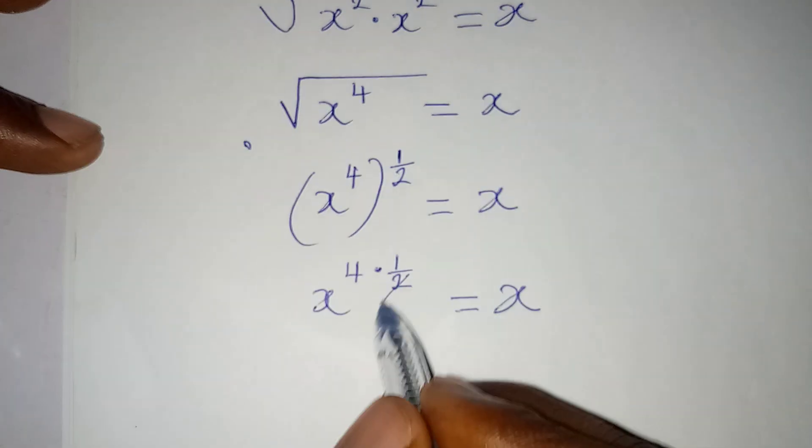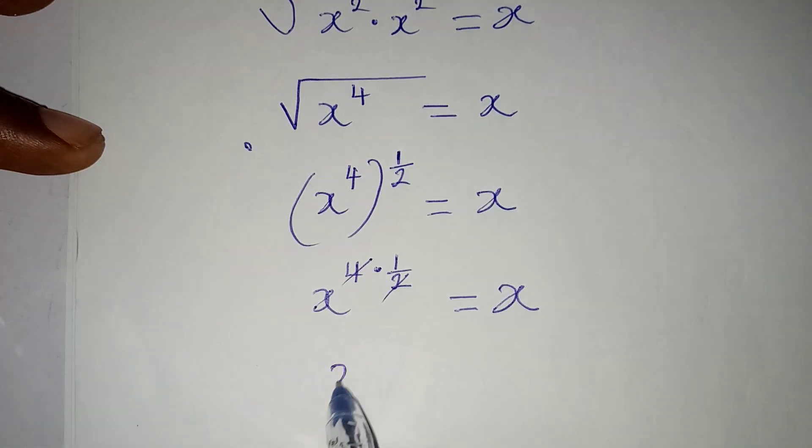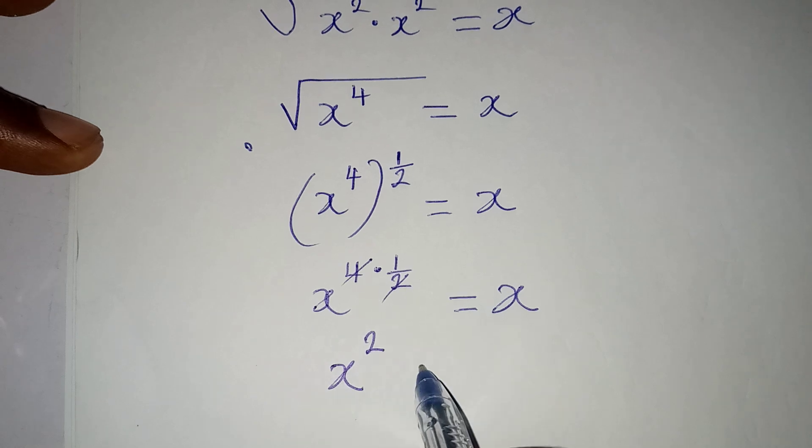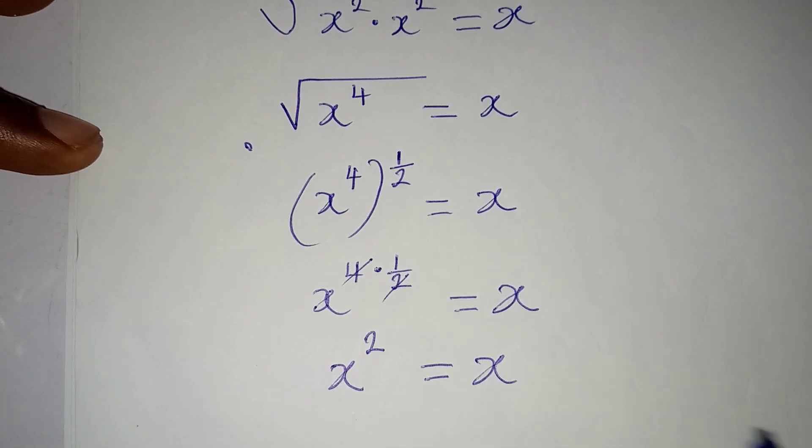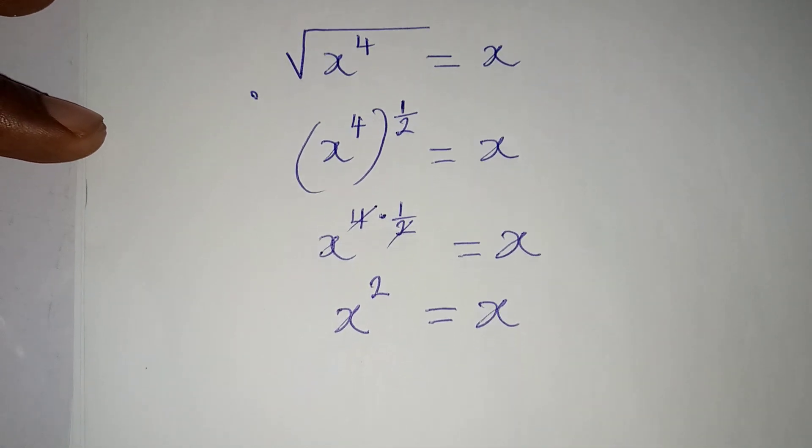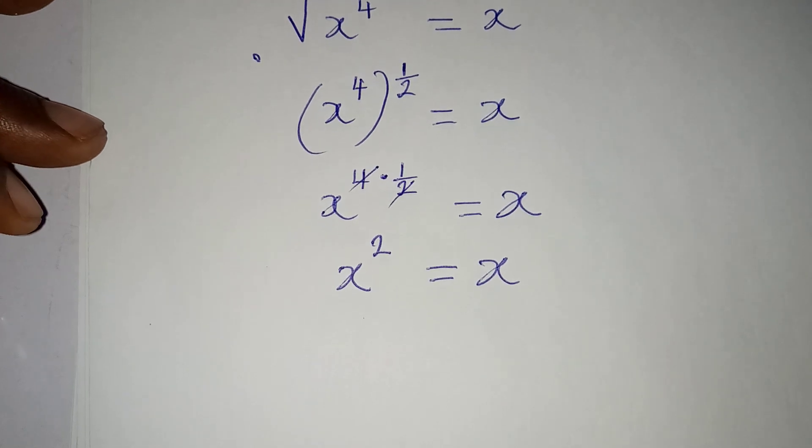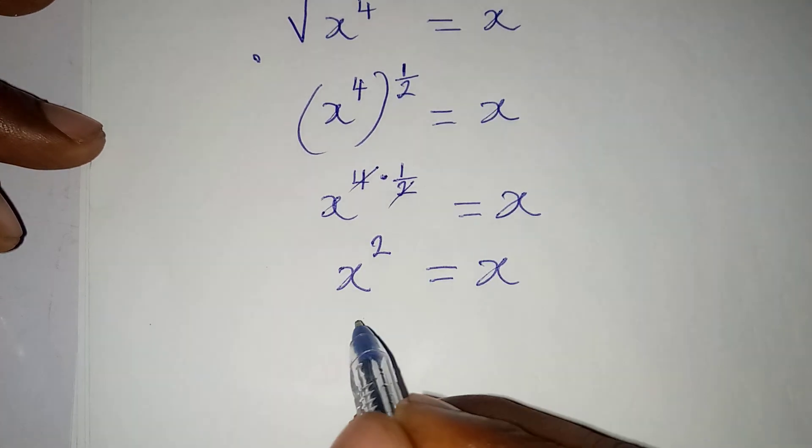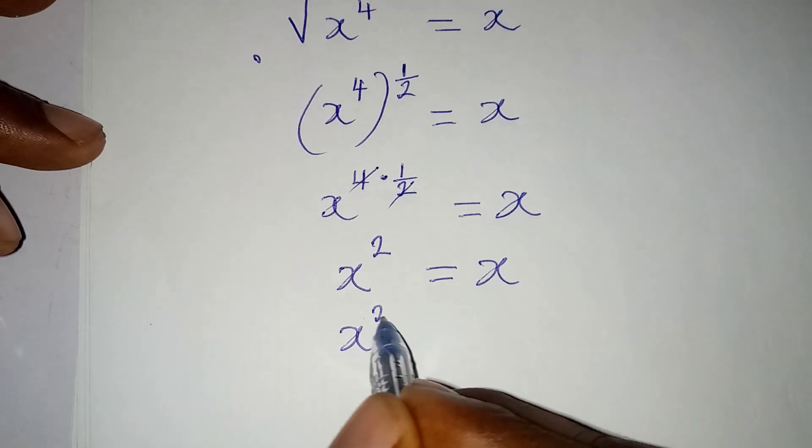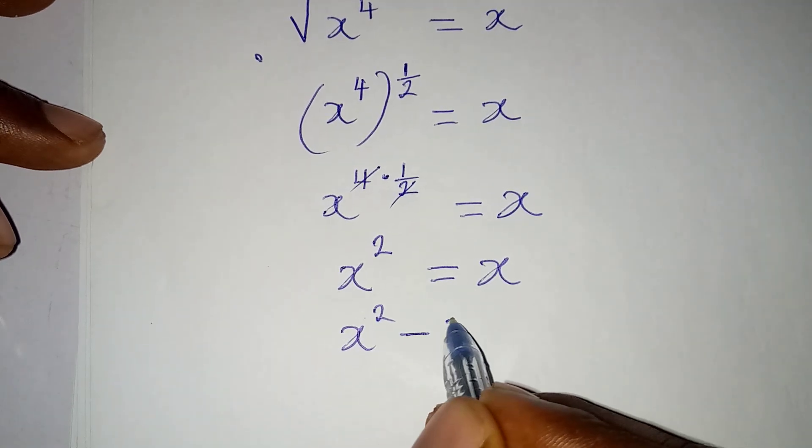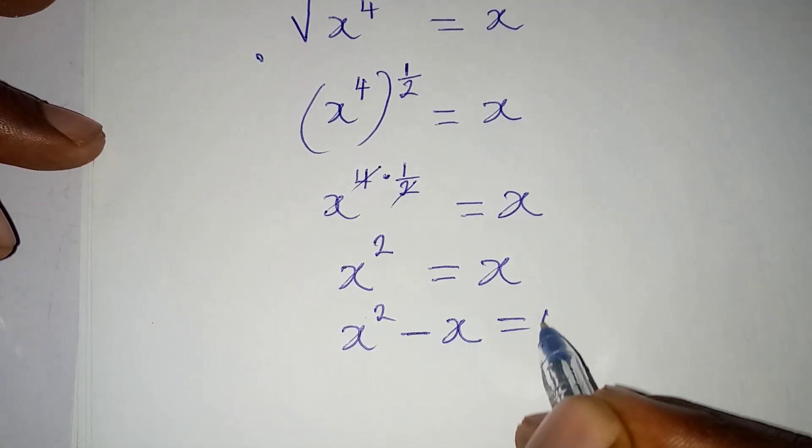Then 2 can go there, so I have x squared to be equal to x. Now I have a quadratic equation. I can bring everything to the left, so I have x squared minus x equal to 0.